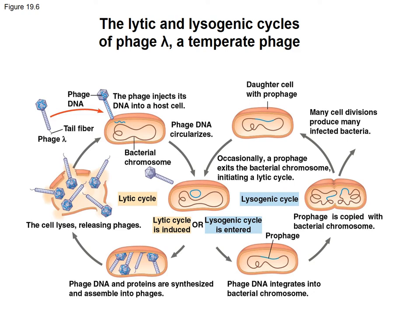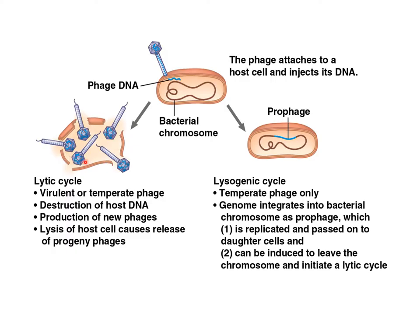In biotechnology, phages can be used where horizontal gene transfer can occur, resulting in production of new phages which are released once the cell is damaged and can infect other cells. The lysogenic cycle is generally a temperate phage type only. Remember, temperate phages can undergo both the lytic and lysogenic cycle. The lytic cycle can involve virulent phages or temperate phages, but only temperate phages can undergo the lysogenic cycle, and they can exit the lysogenic cycle and enter the lytic cycle.